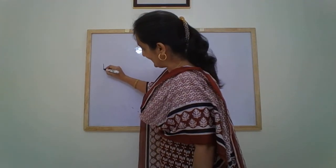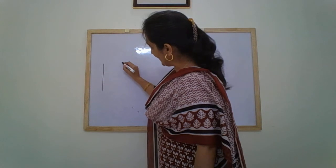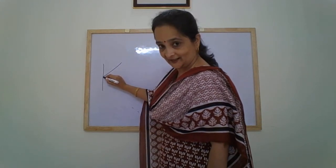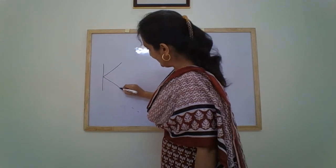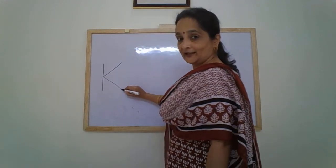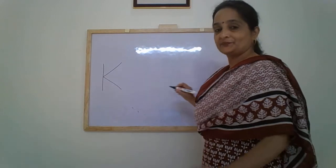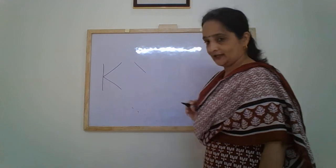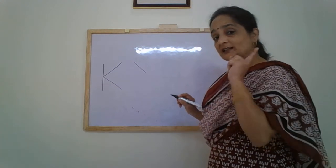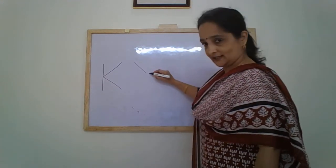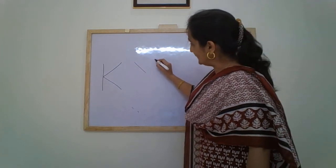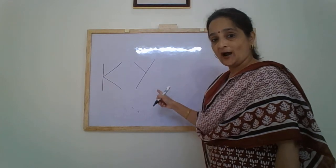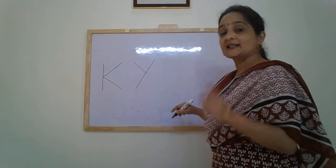Standing line. Slanting line going back. Touch the standing line. Slanting line coming in the front. Letter K. Next is letter Y. First write the small slanting line, then a long slanting line. Letter Y.